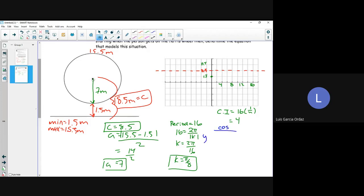So it would be y is equal to negative 7 cos of pi over 8x plus 8.5.